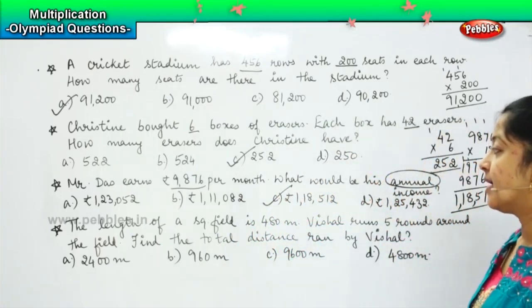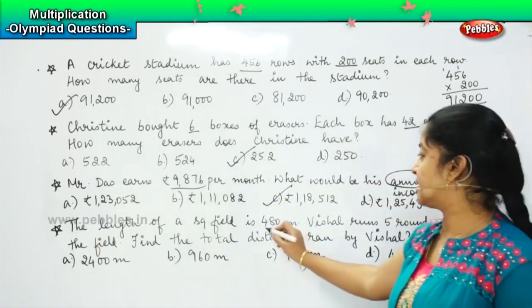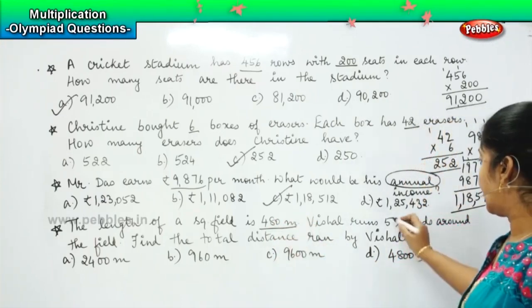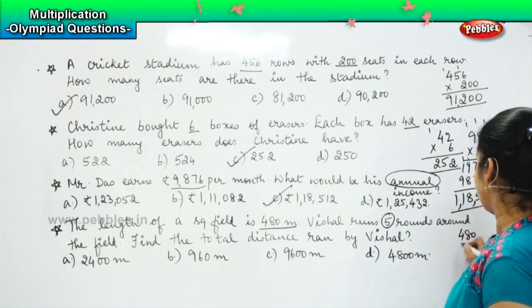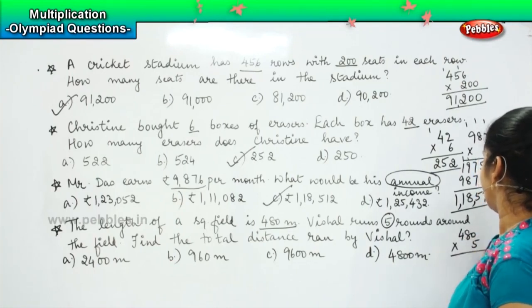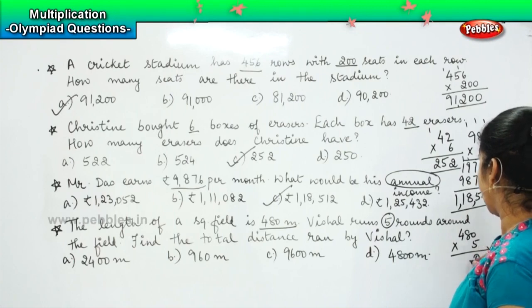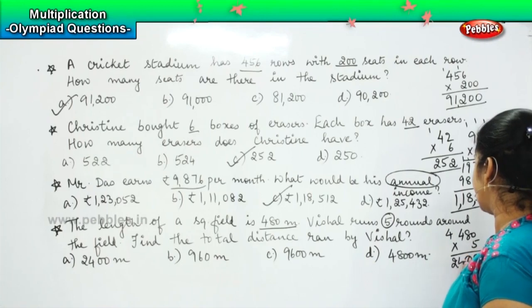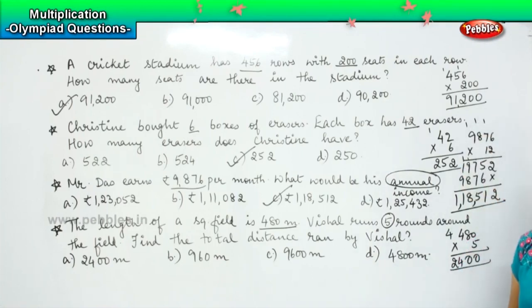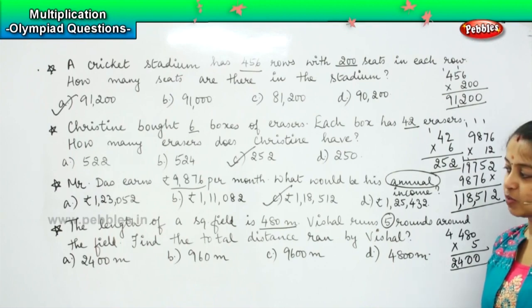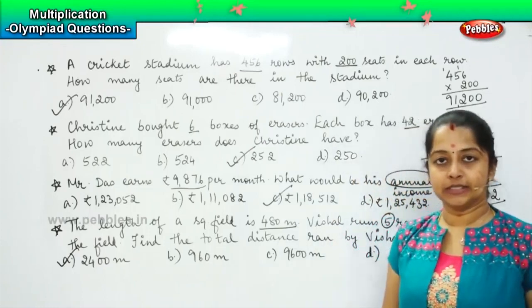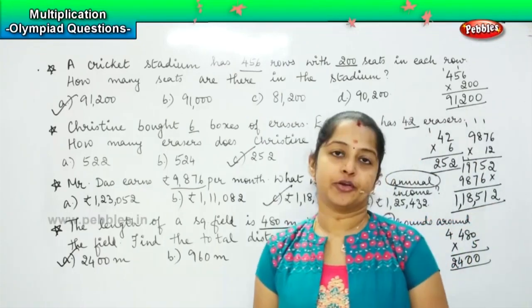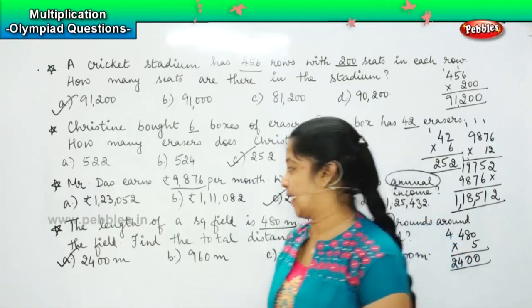Now the question says the length of a square field is 480 meters, and Vishal takes 5 rounds in that field. So 480 into 5. 0 times 5 is 0. 8 times 5 is 40, carry 4. 4 times 5 is 20, 20 plus 4 is 24. So he covered the distance of 2400 meters. Where is it? Yes. It is option A. Clear?